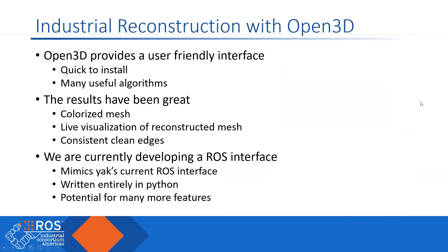To summarize: Open3D provides a user-friendly interface that is quick and easy to install and has many useful algorithms, many of which we still haven't explored. The results have been great — it produces a colorized mesh, which is really handy when generating tool paths, as color reference geometry makes it much easier to know where to generate them. We have live visualization of the reconstructed mesh with consistent, clean edges. We're currently developing the ROS interface in Python to mimic Yak's interface, and there's potential for many more features from Open3D's suite of tools.